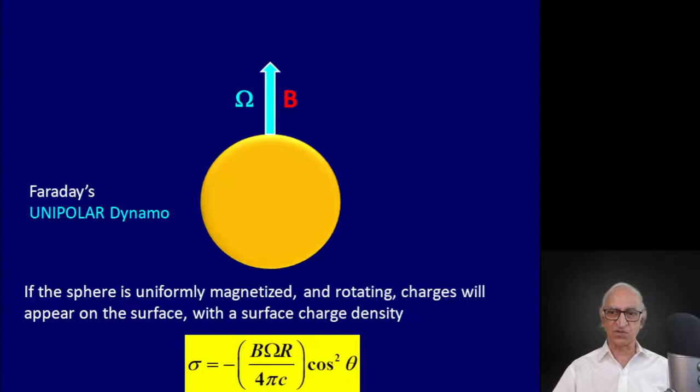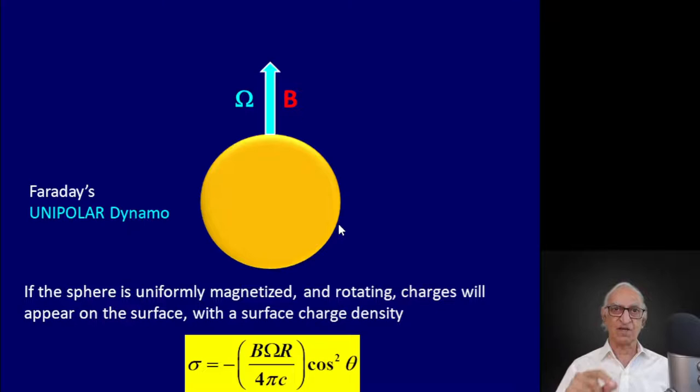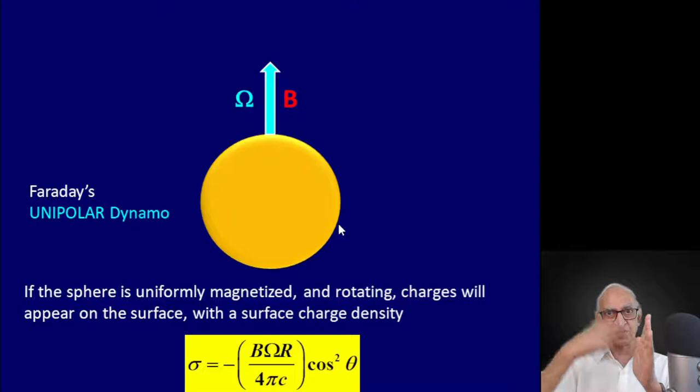Let us try to understand why this charge develops. Consider an electron inside this metallic sphere. It will experience a Lorentz force because there is everywhere inside the sphere a magnetic field of strength B. As the charges move through the magnetic field, there will be a Lorentz force, which is (e/c) V × B. Here V is ω × R, where ω is the angular velocity and R is the distance of the charge from the center of the sphere. So this Lorentz force is ω × R × B.